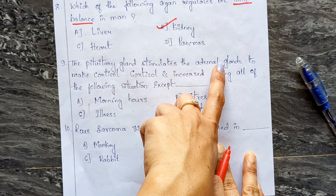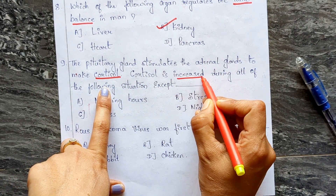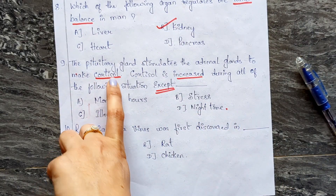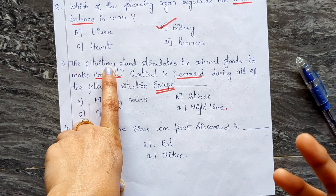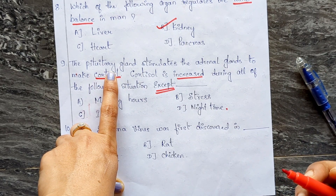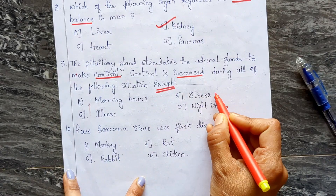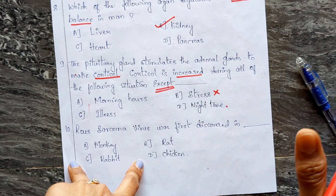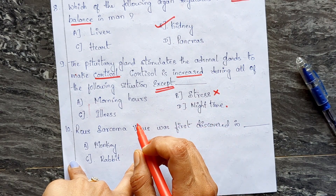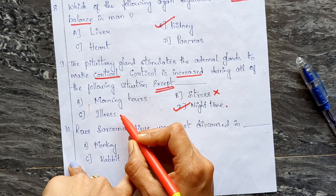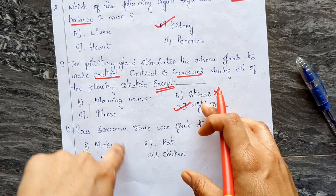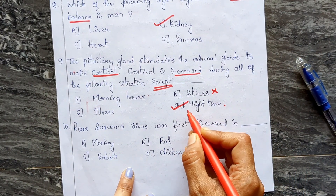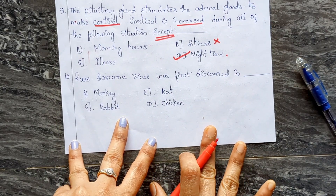Question nine: the pituitary gland stimulates the adrenal glands to make cortisol. Cortisol is increased during all of the following except — A) morning hours, B) stress, C) illness, D) night time. Cortisol is a stress hormone, along with adrenalin and noradrenalin. It is released during stress and illness, and peaks in the morning. During night time, the body is at rest and cortisol release is low, so the correct answer is D — night time.